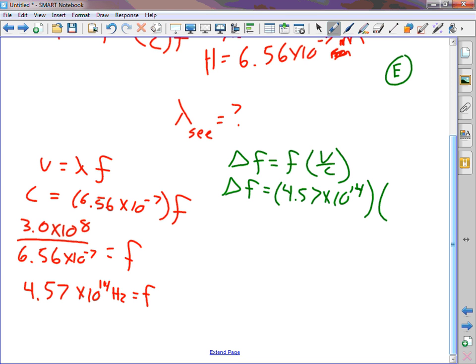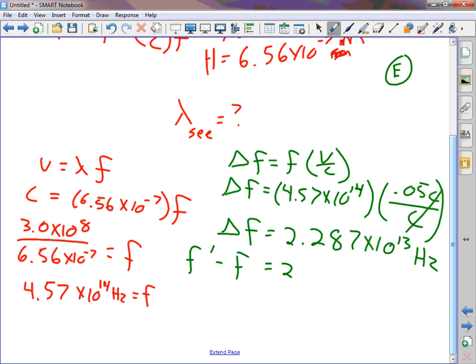This is 0.05c divided by c. C's cancel. That's why it's so useful to leave the speed of life as v. That v there stands for the velocity of the star. So what does delta f have to be? 2.287 times 10 to the 13th hertz. And remember, that is f prime minus f.